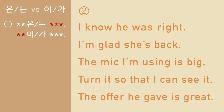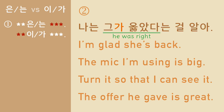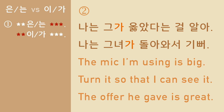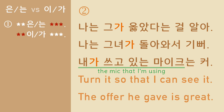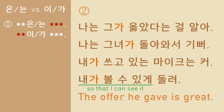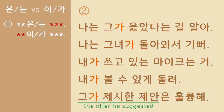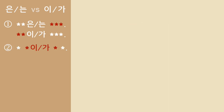Here comes difference number two. These sentences contain a clause, and within a clause you use 이/가. For example: 나는 그가 옳았다는 걸 알아. 나는 그녀가 돌아와서 기뻐. 내가 쓰고 있는 마이크는 커. 내가 볼 수 있게 돌려. 그가 제시한 제안은 훌륭해. So within a clause, you use 이 or 가.